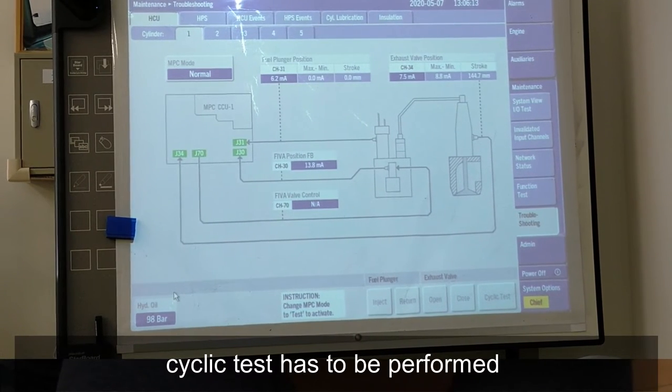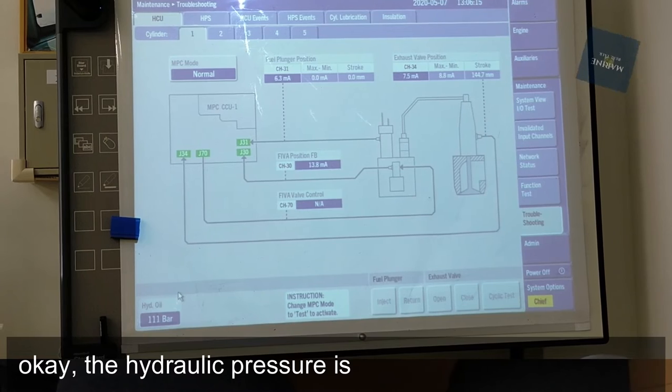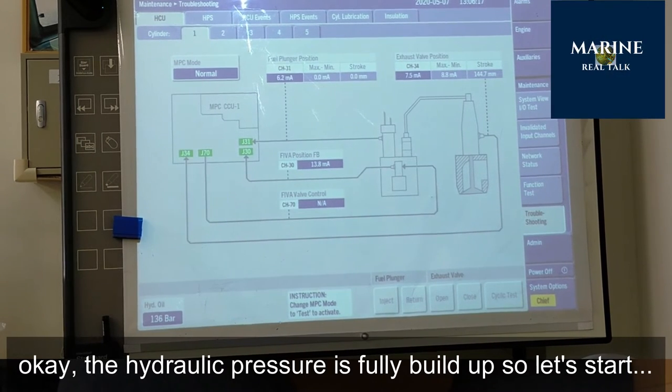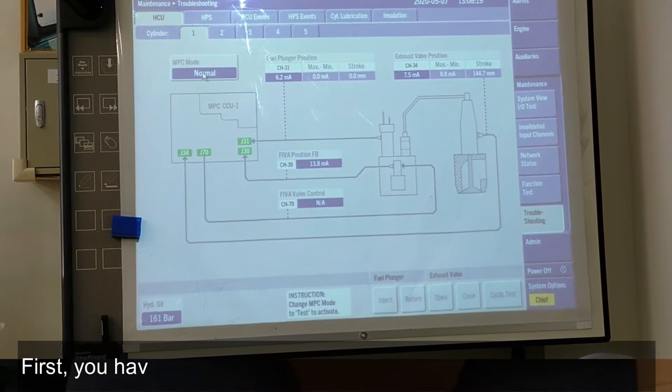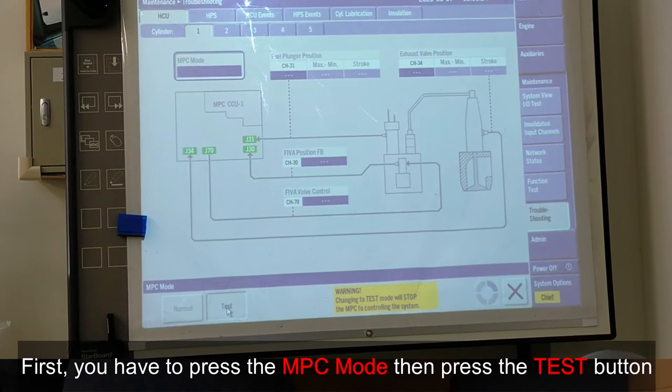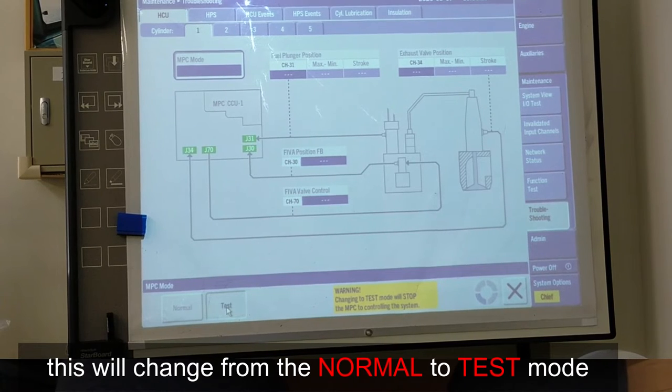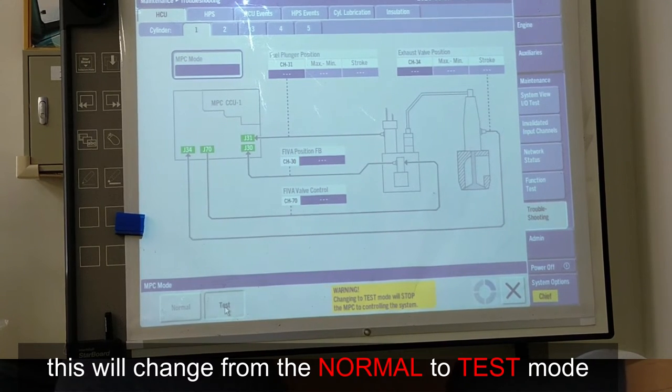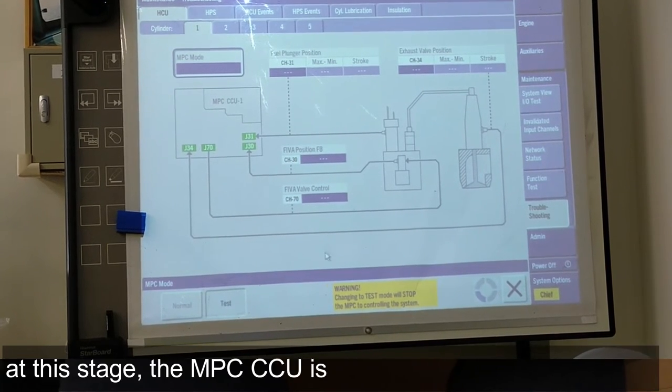Okay, the hydraulic pressure is fully built up so let's start. First, you have to press the MPC mode, then press the test button. This will change from normal to test mode. At this stage, the MPC CCU is rebooting to change the mode.